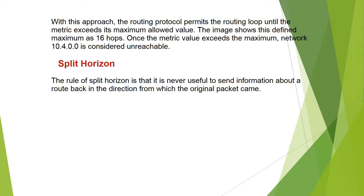With this approach, the routing protocol permits the routing loop until the metric exceeds its maximum allowed value. They may show this defined maximum as 16 hops. Once the metric value exceeds the maximum, network 10.4.0.0 is considered unreachable.